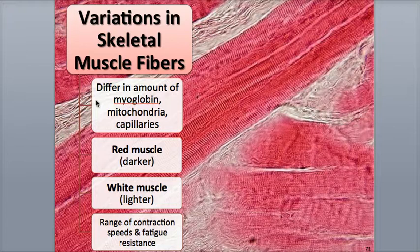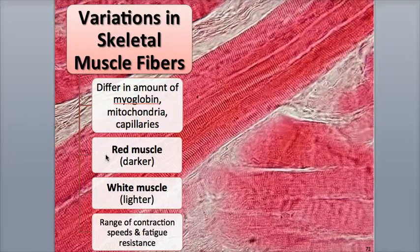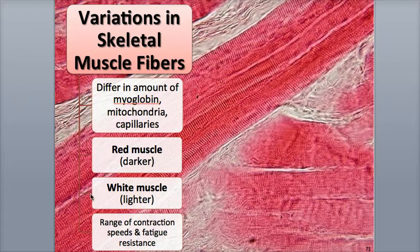Some of the differences include the amount of the oxygen-binding protein myoglobin within their fibers, their number of mitochondria, and their supply of blood capillaries. Red muscle fibers have a darker color than other fibers due to their higher concentrations of myoglobin, mitochondria, and capillaries. Red muscle fibers are also what we call the dark meat in chicken, while white muscle fibers, or white meat, contain less myoglobin, mitochondria, and capillaries.